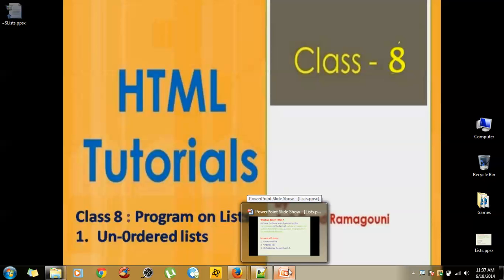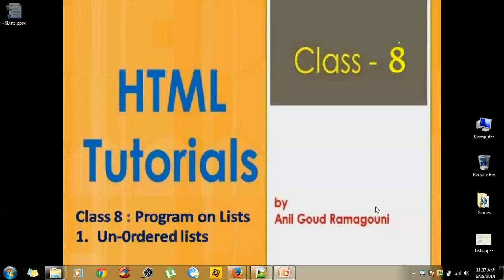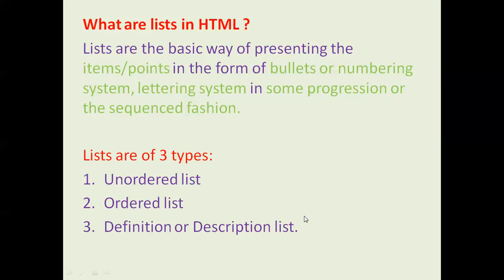Hi guys, welcome to HTML tutorials. This is Anil, once again back. In this tutorial today I'm going to teach you about lists in HTML. There are various lists available in HTML that we are going to discuss. A list is the basic way of presenting items or points in the form of bullets, numbering system, or lettering system in some progression or sequenced fashion. Basically, lists are of three types: unordered list, ordered list, and definition or description list.